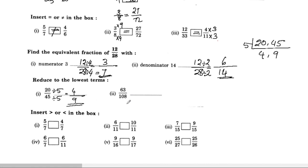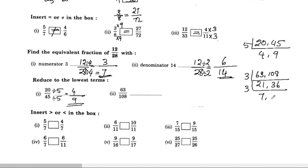Next, reduce 63 by 108 to lowest terms. For 63 we get 3 times 21, which is 3 times 3 times 7. For 108 we get 3 times 36, giving 3 times 3 times 12. The common factor is 9. Dividing: 63 by 9 is 7, and 108 by 9 is 12. So 63 by 108 in lowest terms is 7 by 12.